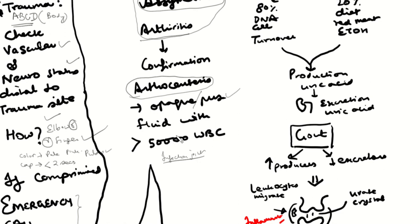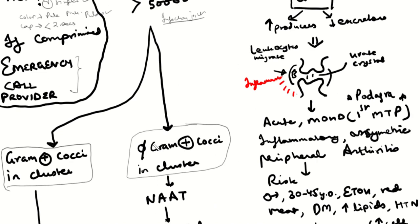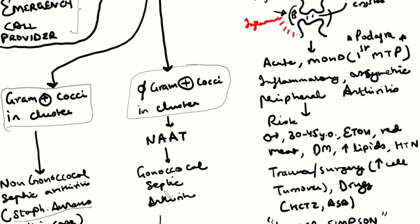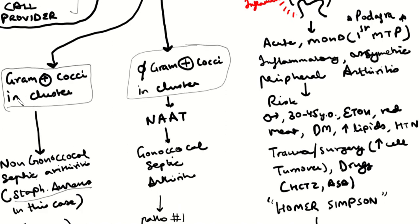So: patient presents with acute monoarticular inflammatory asymmetric arthritis → arthrocentesis → greater than 50,000 WBCs → septic. Under the microscope with a gram stain: no gram-positive cocci in cluster → perform NAAT. If NAAT is positive, it's gonorrhea; if negative, it's non-gonococcal — most commonly Staph aureus, where you see gram-positive cocci in cluster. Culture results take a few days, but you don't wait.